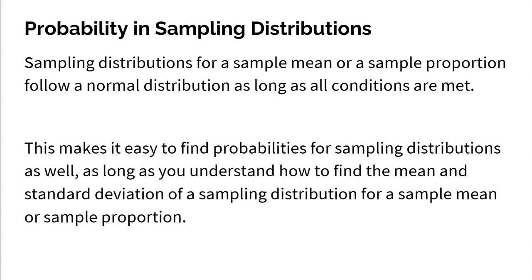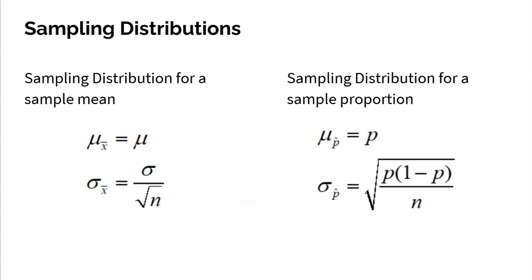Within a normal distribution, you need a mean and a standard deviation. All sampling distributions have a mean and they have a standard deviation. Let's look at those formulas quickly.